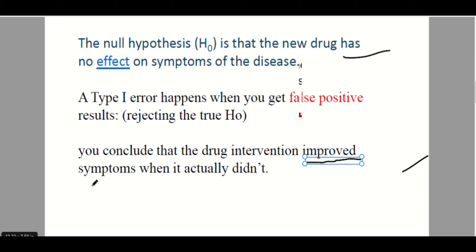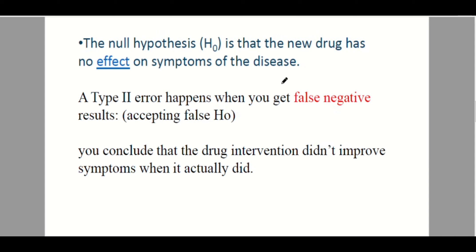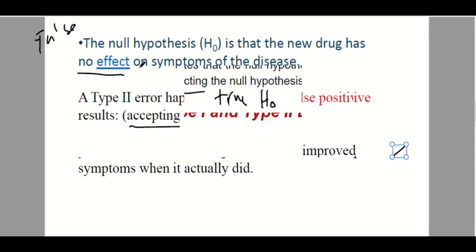In the type 2 error, we accept the false null hypothesis. The null hypothesis — that the drug has no effect — is already false, but we accepted it. That is why it's an error. Since we accepted it, our conclusion is that the drug intervention didn't improve symptoms when it actually did. We accepted the false null hypothesis.